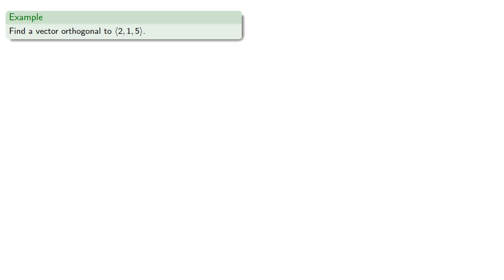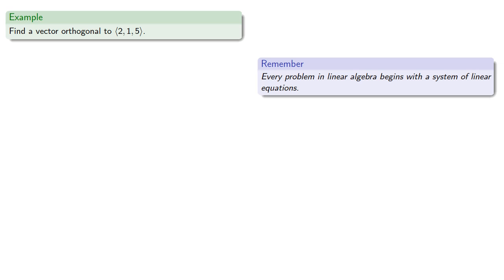So let's start off easy, let's find a vector orthogonal to (2, 1, 5). Remember, every problem in linear algebra begins with a system of linear equations. And we know that if two vectors are orthogonal, their dot product is 0.